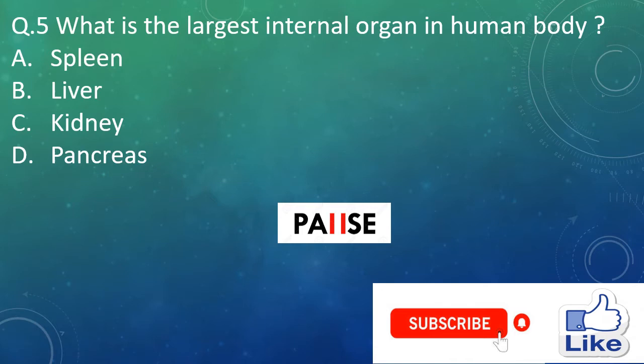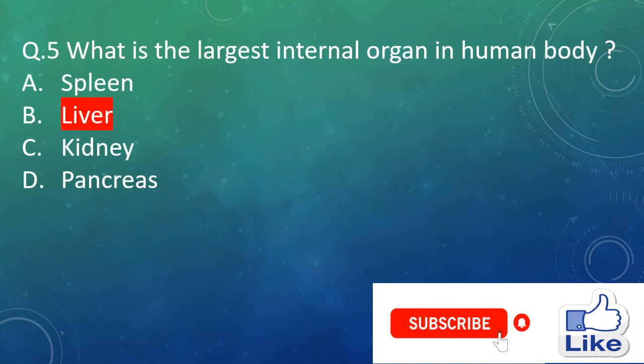Question 5. What is the largest internal organ in the human body? Option A: spleen, option B: liver, option C: kidney, and option D: pancreas. The right answer is option B, liver.